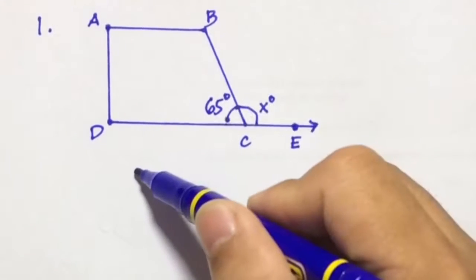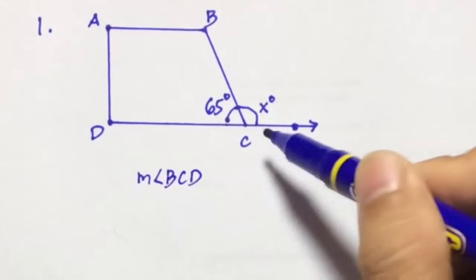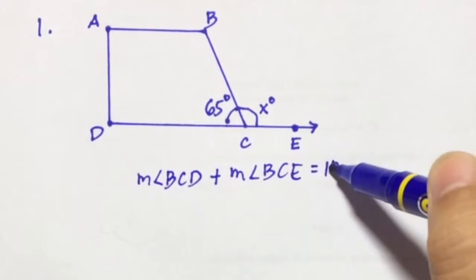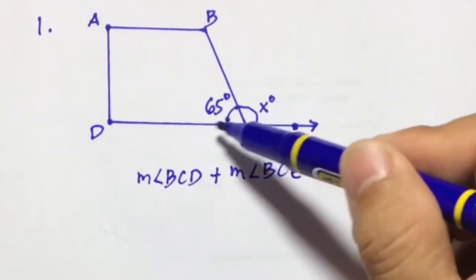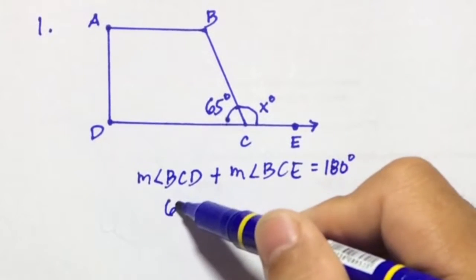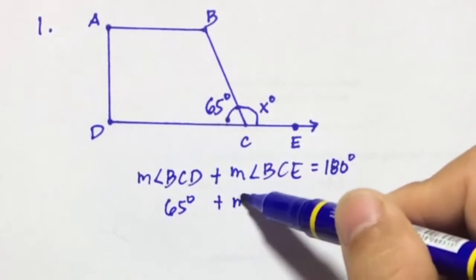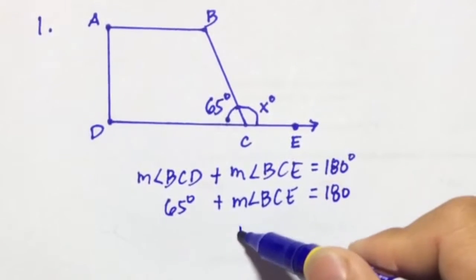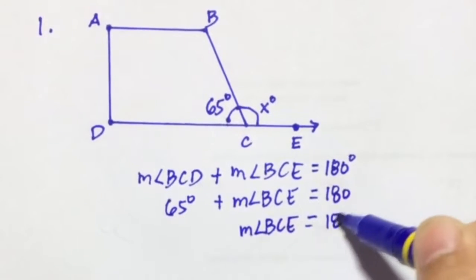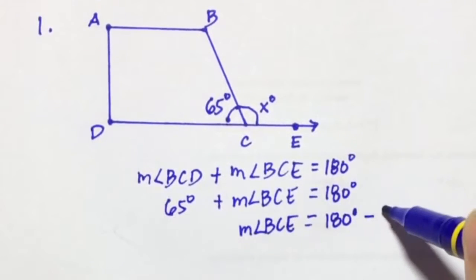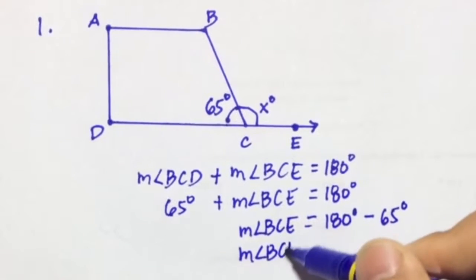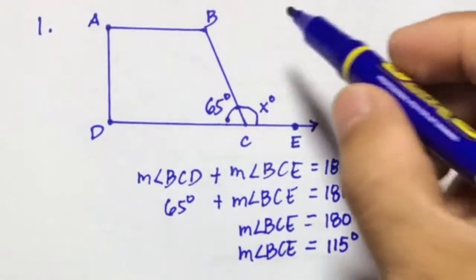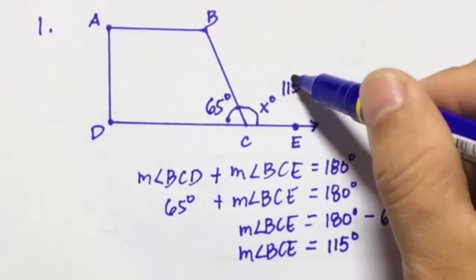To solve this, the measure of angle BCD, the interior angle, plus the measure of angle BCE, the exterior angle, equals 180 degrees. Angle BCD is 65 degrees, so we substitute: 65 degrees plus X equals 180. Therefore, the measure of angle BCE equals 180 minus 65, which is 115 degrees. So X equals 115 degrees.